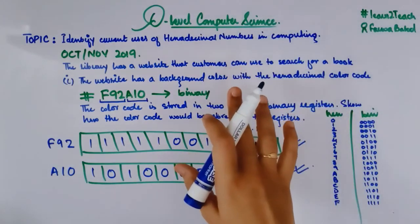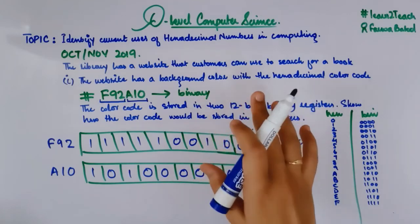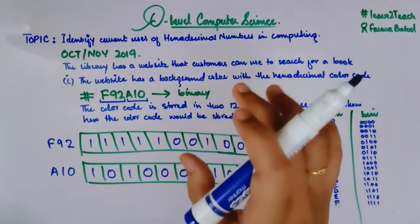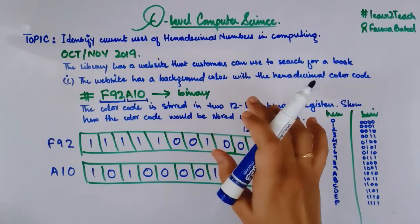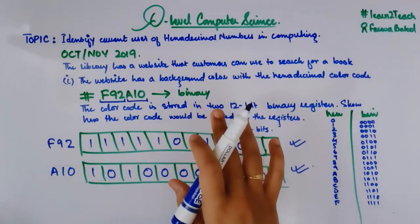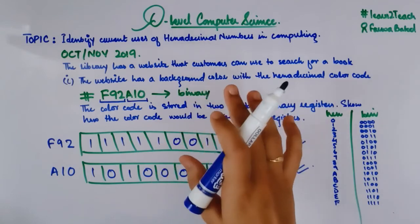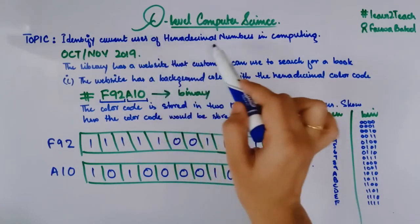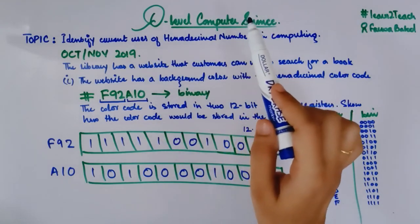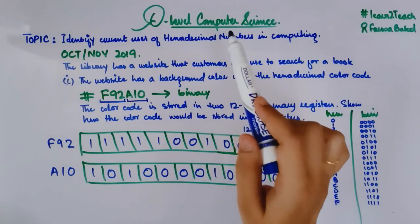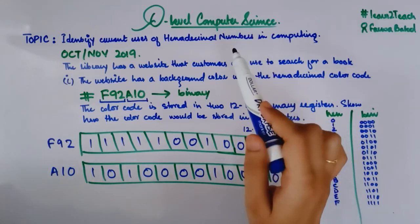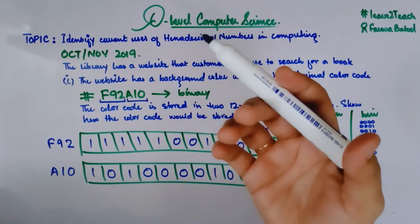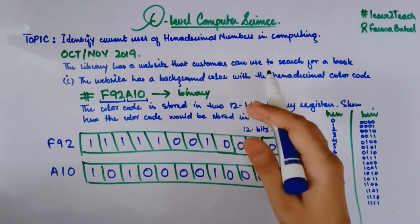I think the color codes are clear to you and we have seen a past paper example to reinforce the topic. Thank you for watching. If you have any questions, comment below and I'll solve them. In the next video we are going to look at another use of hexadecimal numbers: MAC addresses. Please like, share, and subscribe — see you in the next video!